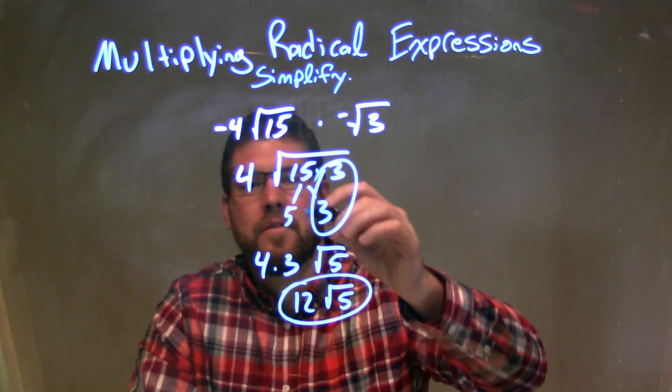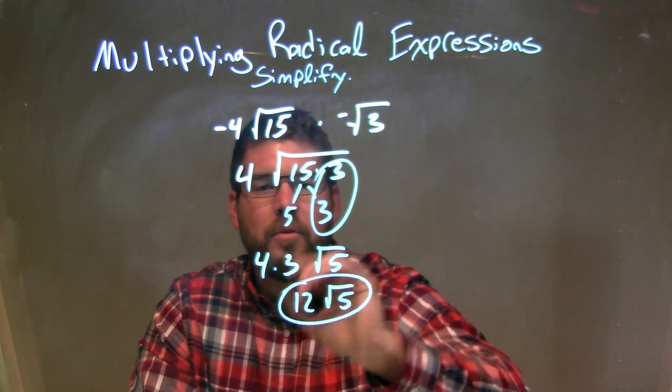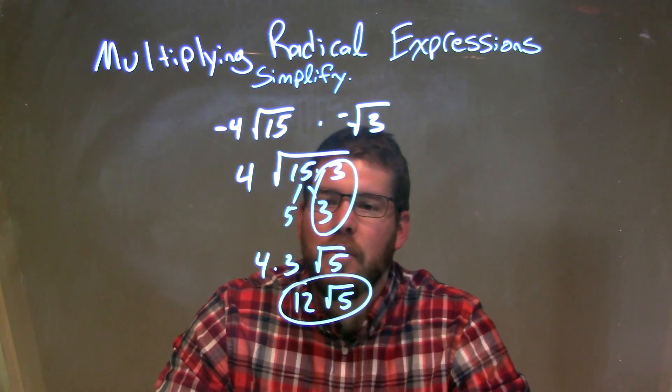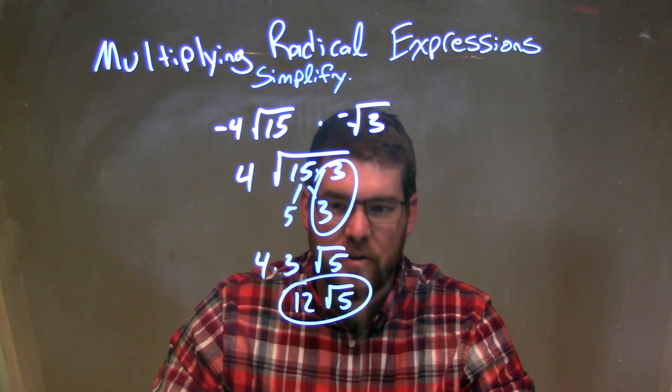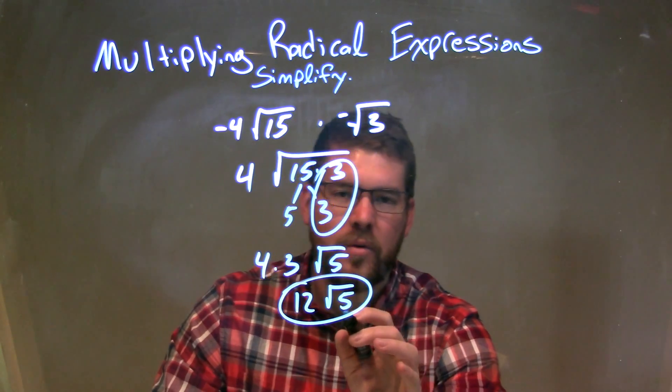So there's a pair of 3s right there, leaving 5 by itself on the inside, and then 1, 3 on the outside now. So we multiply together. Now the 4 times 3, which is 12, which gives us now our final answer again of 12 times the square root of 5.